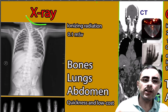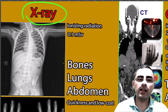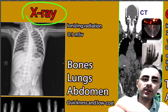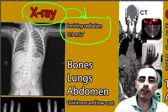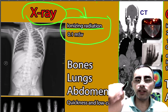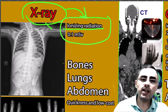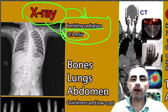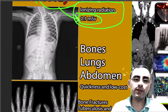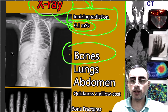We'll talk about X-ray, CT scan, and MRI — their differences and applications. Let's start with X-ray. X-ray uses ionizing radiation. We focus on this because ionizing radiation increases the risk of cancer, but X-ray contains very few — only 0.1 millisieverts — and is considered very low.